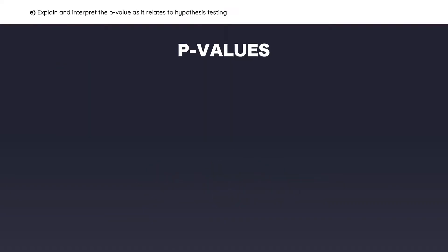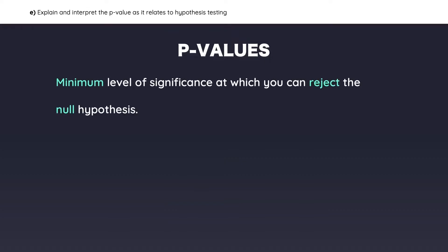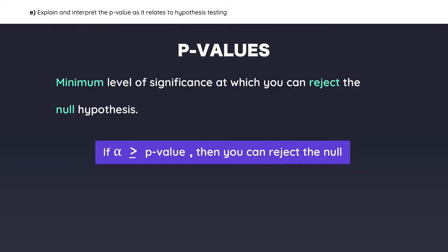Another key term you should be familiar with is the p-value. It is the minimum level of significance at which we can reject the null hypothesis. The key here is to compare the p-value to the level of significance. If the level of significance is greater than or equal to the p-value, then you can reject the null hypothesis.